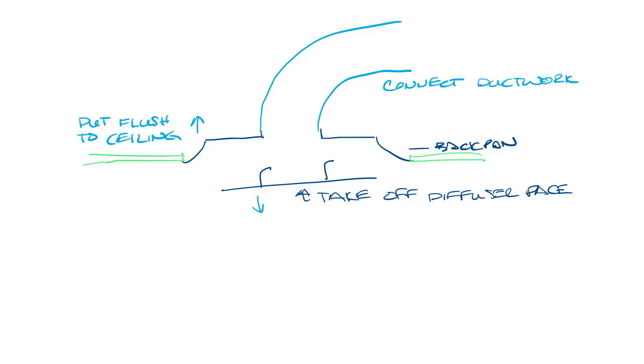And from here you'll shoot screws through the backpan into the framing that you've installed to hold the diffuser in place. And then you can put the diffuser face back on. You should also try to put the screws in so that they're not visible from the ground when the diffuser face is put back on.